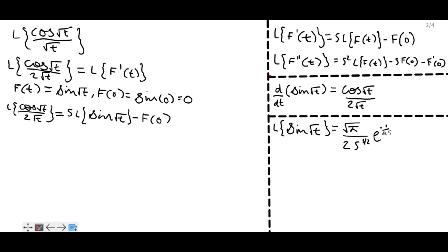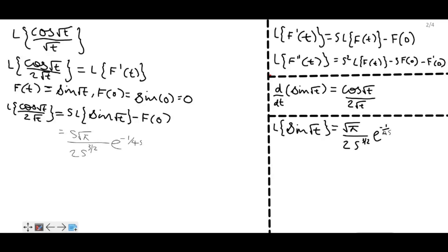So we can write the Laplace transform of cos(√t) / (2√t) as s times √π / (2s^(3/2)) times e^(-1/4s), with f(0) = 0. We obtained the Laplace transform of cos(√t) / (2√t), but we need the Laplace transform of cos(√t) / √t.